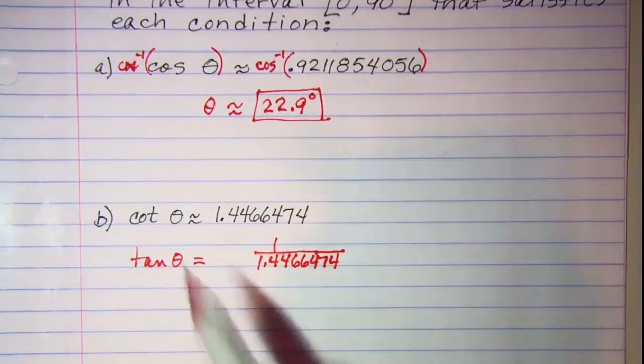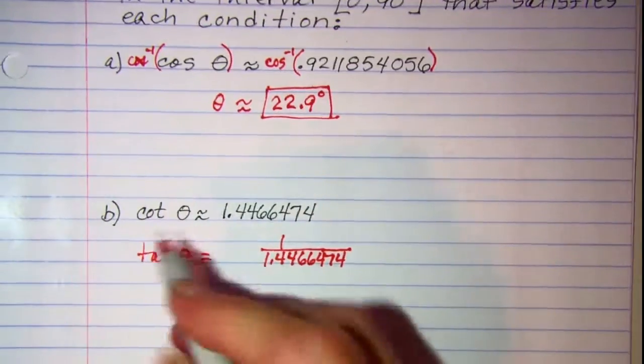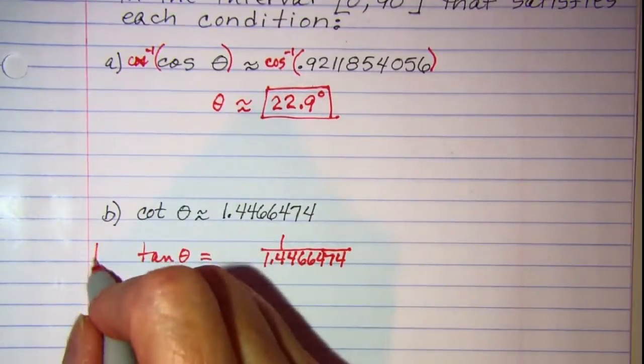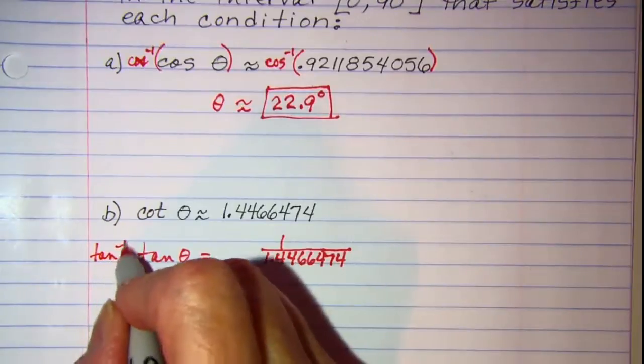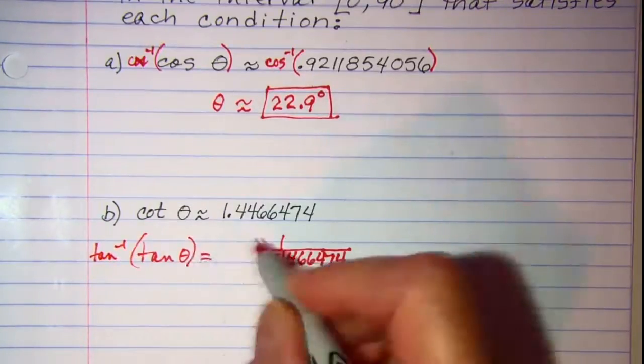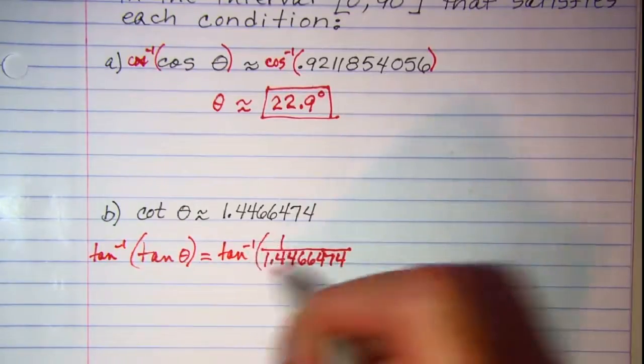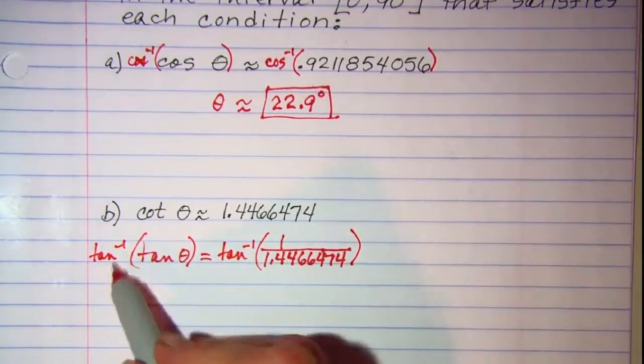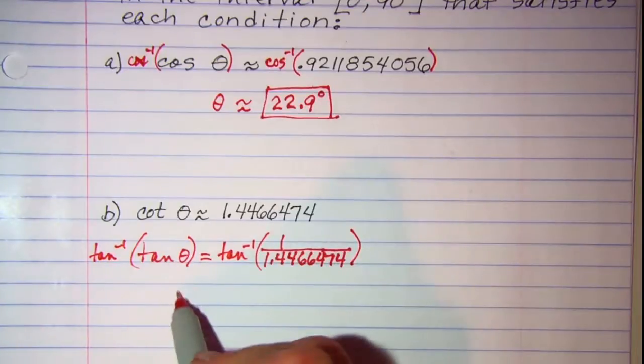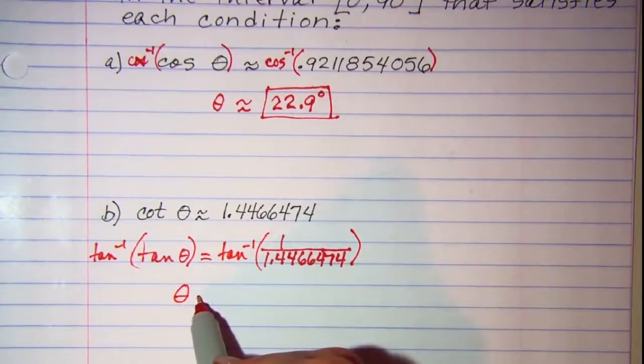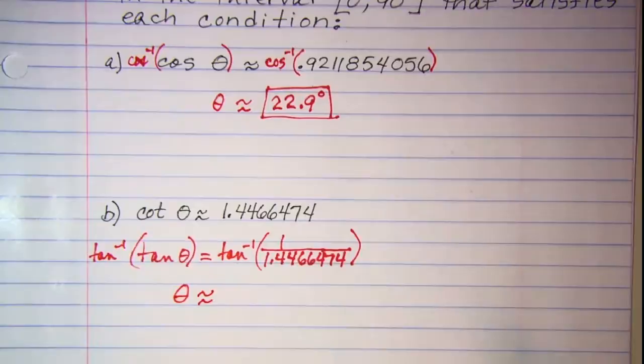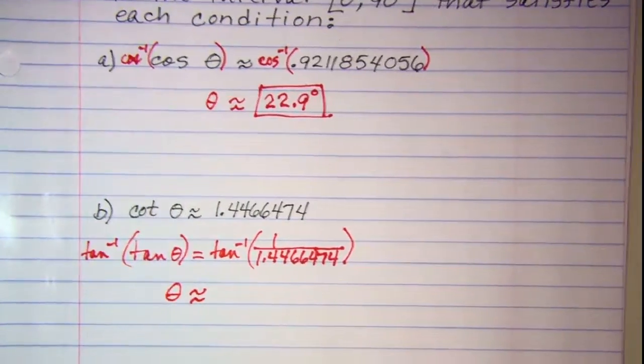Then to get theta by itself, I want to inverse tangent both sides. These inverse functions cancel each other off and I have just theta on the left side approximately equal to